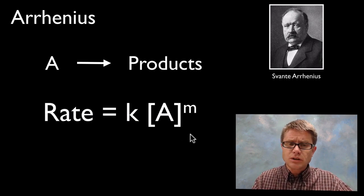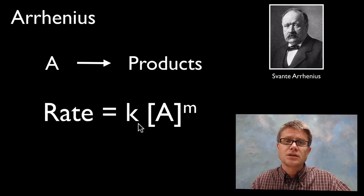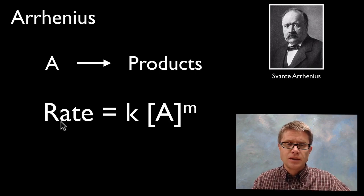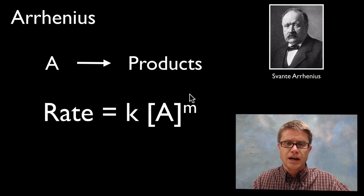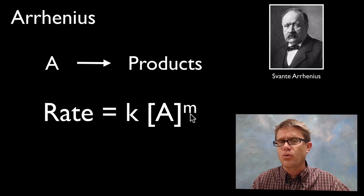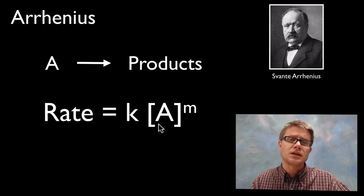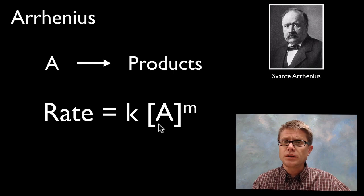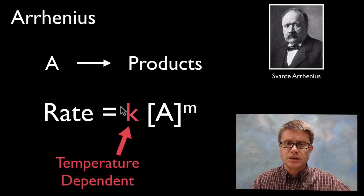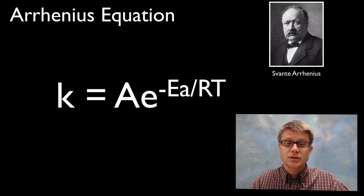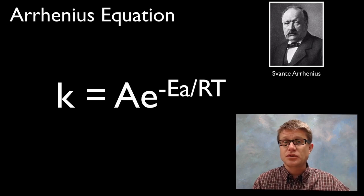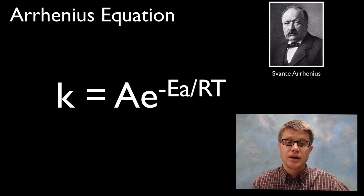What he came up with involved looking at the rate equation. This is the rate of the reaction; this is the rate constant K. A is going to be the concentration of the reactants, and M tells us about the order of that reaction. If we look at all of these, which one is really going to be affected by temperature? It's K. There is a temperature dependence built into K, and the Arrhenius equation describes that temperature dependence of the rate constant.